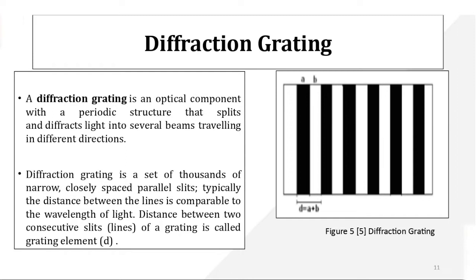To observe the diffraction pattern, we use a diffraction grating. In the diffraction grating there are a number of slits. The slit width is denoted as 'a', and 'b' is the distance between two adjacent slits. So 'a' is the slit width and 'b' is the distance between the two slits.